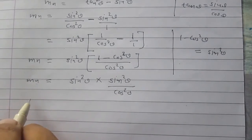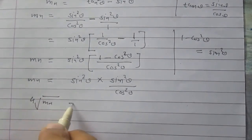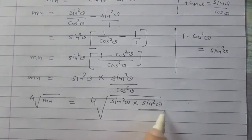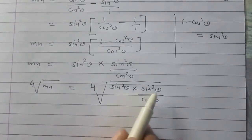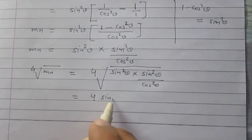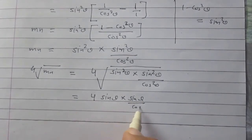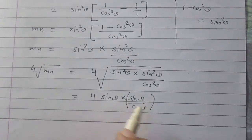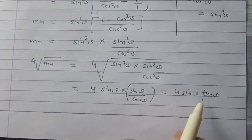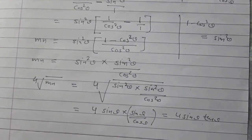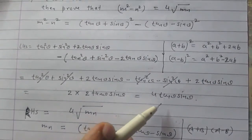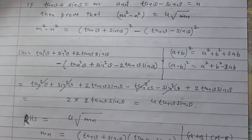So 4√(mn) = 4√(sin²θ · sin²θ / cos²θ). Since all terms are in multiplication or division, the square root simplifies as: 4 · sin θ · (sin θ / cos θ) = 4 · sin θ · tan θ, because tan θ = sin θ / cos θ. We proved earlier that LHS = 4·sin θ·tan θ as well. Hence LHS = RHS, and the proof is complete.